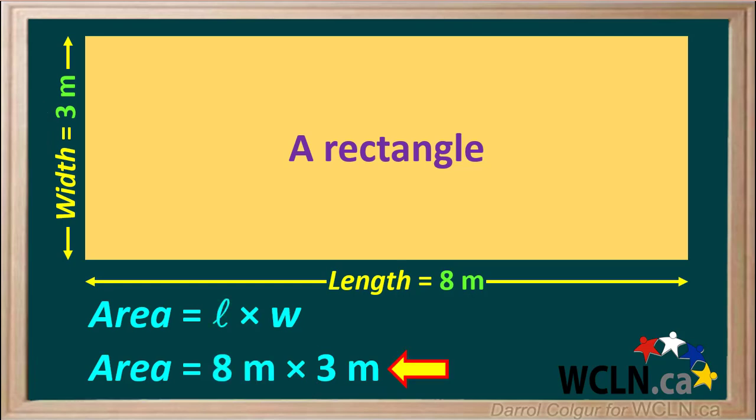So the area is 8 meters times 3 meters, which is 24 meters squared or 24 square meters. Let's talk about the units we use for area.